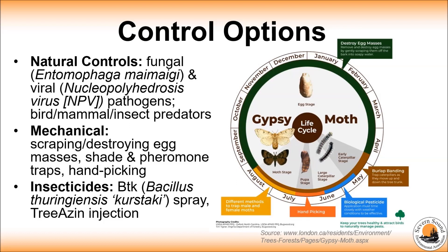The insecticide must be applied during the early immature caterpillar stage when they just begin feeding on leaves — typically late May or early June, but can vary depending on weather conditions in any given year. The caterpillars must ingest the insecticide for it to work; it's not a contact insecticide. Products must be registered for legal use on gypsy moth and purchased and applied by qualified pesticide applicators.